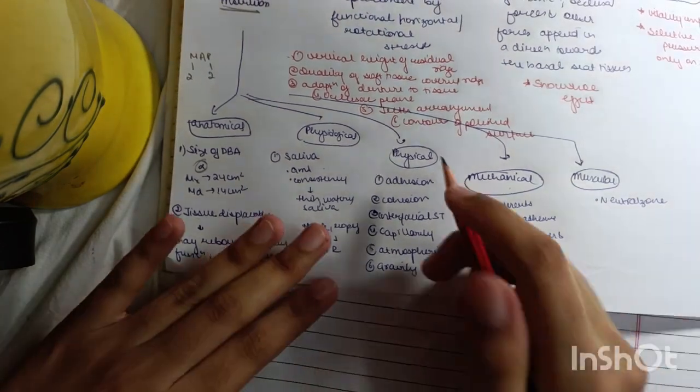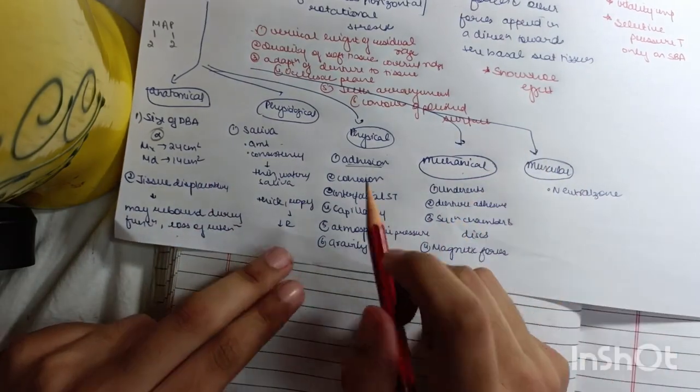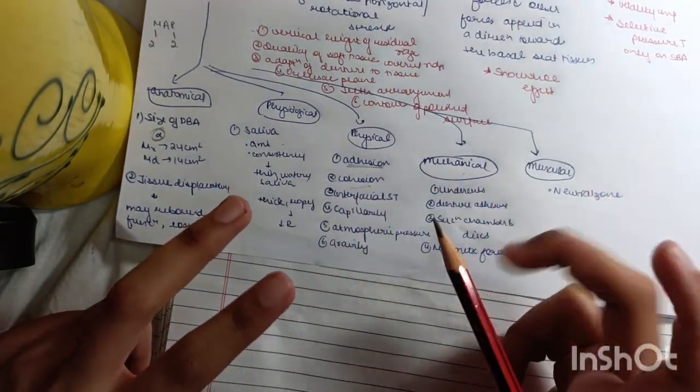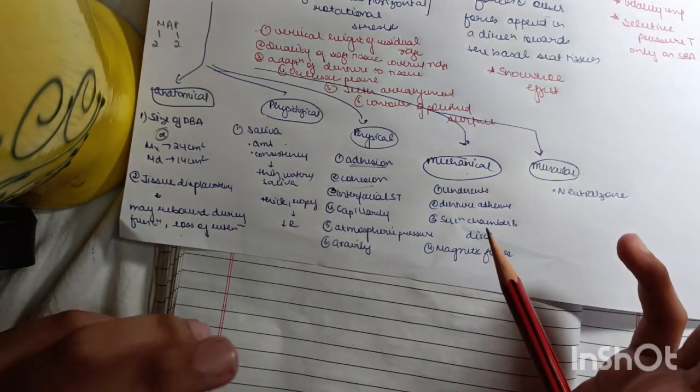Physical: adhesion between two different surfaces, cohesion between two similar surfaces. Adhesion is basically between saliva and the denture base material.